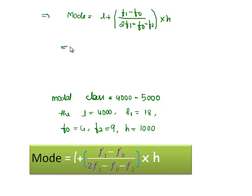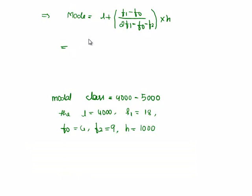Substituting all those values in it, we get 4000 plus, within brackets, F1 minus F0 that is 4 by 2F1, 2 into 18, minus F0, it is 4, minus F2, it is 9, whole bracket into H, that is class size, it is 1000.